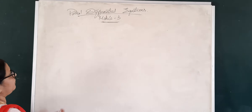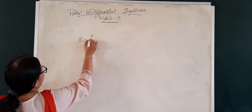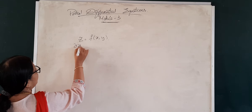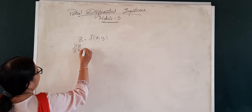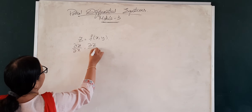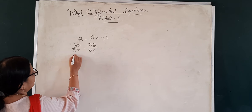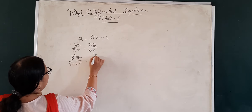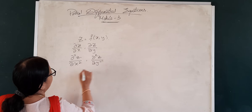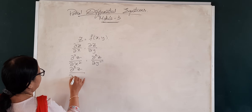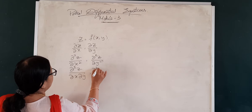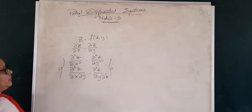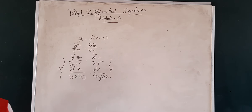Let us consider a function of two variables. Let z be a function of two variables x and y. Then the partial derivatives of z with respect to x and y are dou z by dou x and dou z by dou y — these are the first order derivatives. And the second order derivatives are dou square z by dou x square, dou square z by dou y square, and also dou square z by dou x dou y or dou square z by dou y dou x. These are the second order partial derivatives.